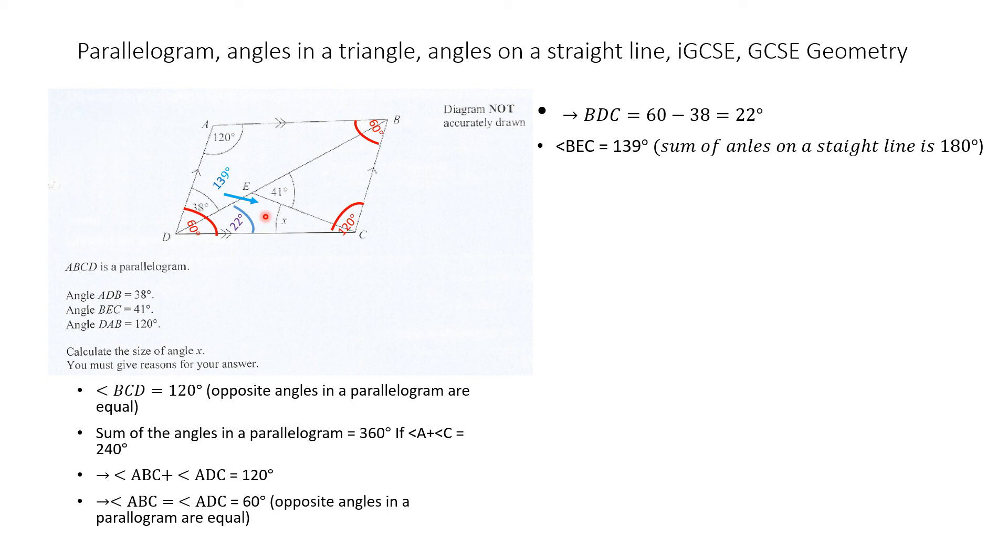Now in this triangle here, we know the value of two angles. To find the value of angle x, we do x plus 22 plus 139 equals 180 degrees, because the sum of the angles in a triangle is 180 degrees.